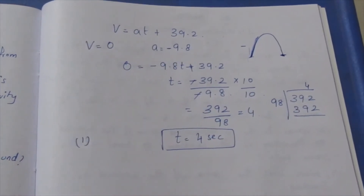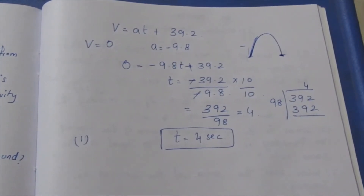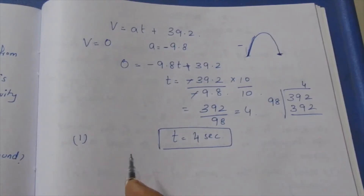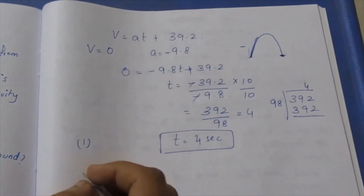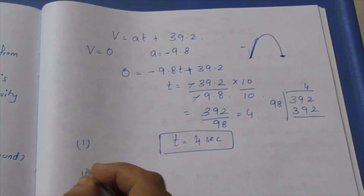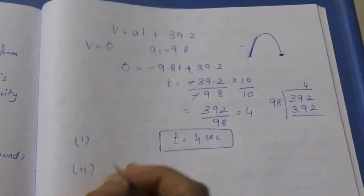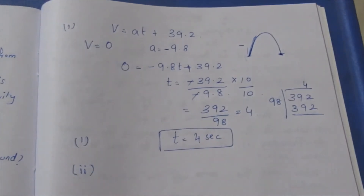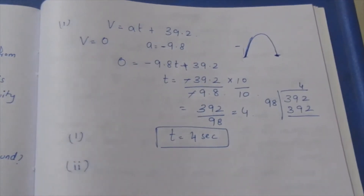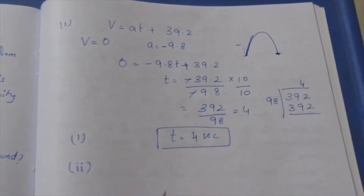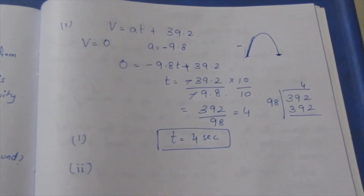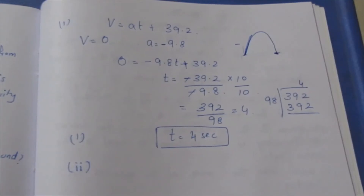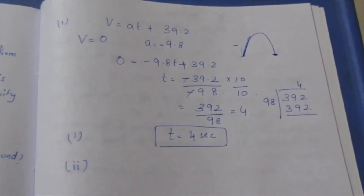4 seconds is the time to reach maximum height. The total time for the ball to strike the ground is 8 seconds, since it takes 4 seconds up and 4 seconds back down. Now for the second sub-question: the speed with which it strikes the ground.